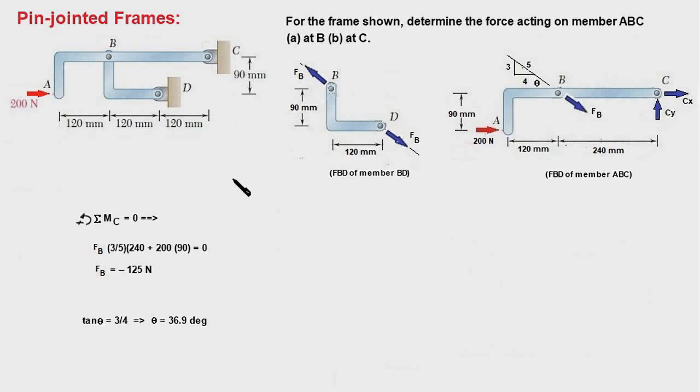Next we apply the three equilibrium equations to this member, and we first take moment of all the forces about point C and resolve the force FB into horizontal and vertical component. The horizontal component would pass through point C, therefore have no moment about C. Nevertheless, the vertical component of FB will have anticlockwise moment and this 240 mm would be the moment arm. So we have FB times 3 upon 5, which is the vertical component of FB, times 240 is the moment.